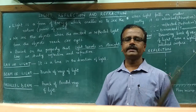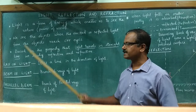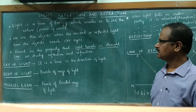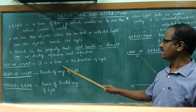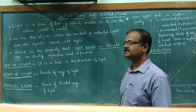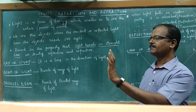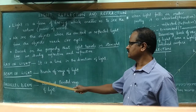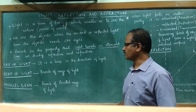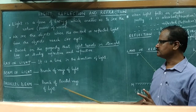Before we go into the details of reflection and refraction, we should know certain simple terms such as what is a ray of light, what is a beam of light, and what is a parallel beam of light. A ray of light is a line drawn in the direction of light. If it is a bunch of rays of light traveling in a particular direction, that bunch gives rise to a beam of light. A bunch of parallel rays of light in a particular direction gives you a parallel beam of light.